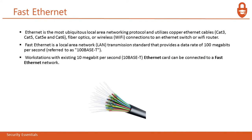Next is Fast Ethernet. Ethernet is the most ubiquitous local area network protocol and utilizes copper Ethernet cables — either CAT3, CAT5, or CAT6 — as well as fiber optics or wireless Wi-Fi. Fast Ethernet is a local area network transmission standard providing a data rate of 100 megabits per second. Workstations with existing 10 megabit per second base Ethernet cards cannot be connected to a Fast Ethernet network, as Fast Ethernet uses 100 megabits, that is 100Base-T.